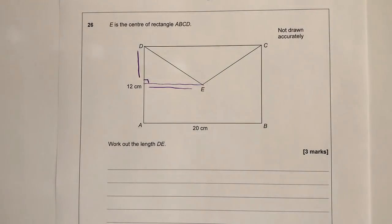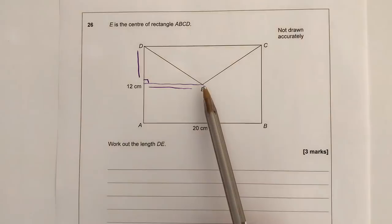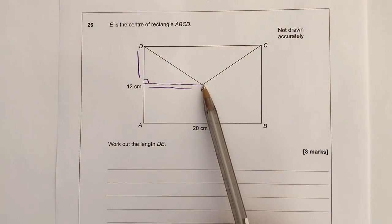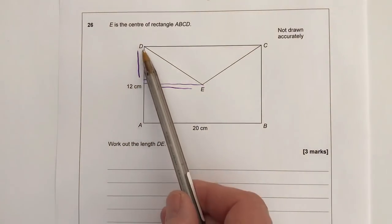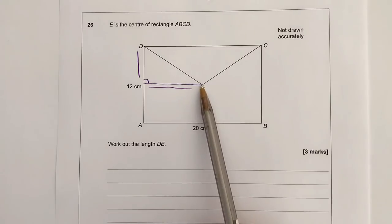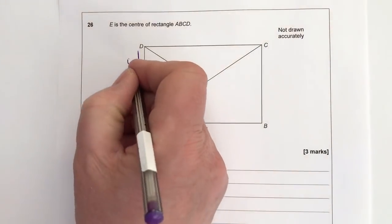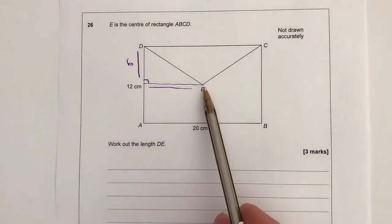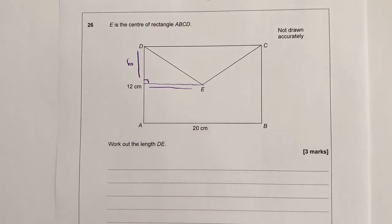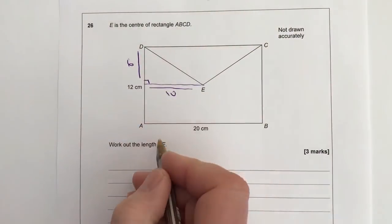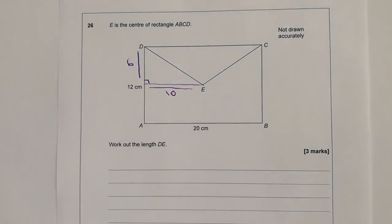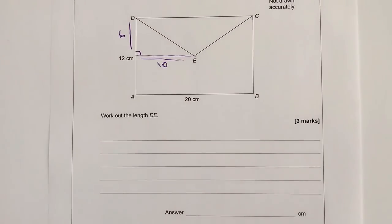Now, if we look at the actual diagram itself, it tells us that E is the center of rectangle ADCB, so it's the center. So that means this length here must be 6. It also means then that this length along here must also then be half of the overall length, so it must be 10. So what we've got then is a Pythagoras problem.